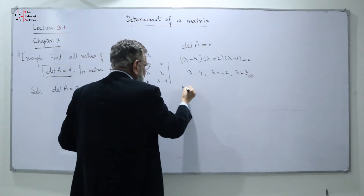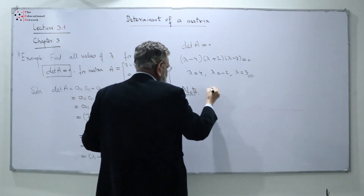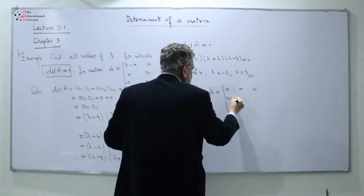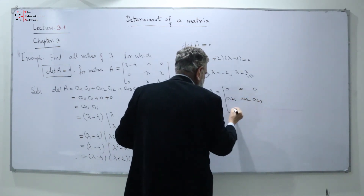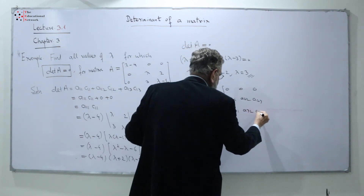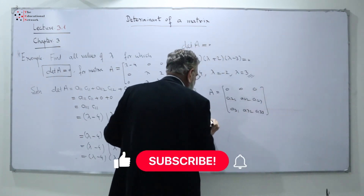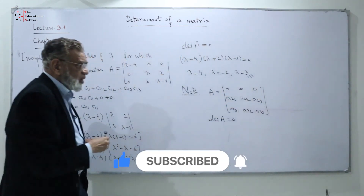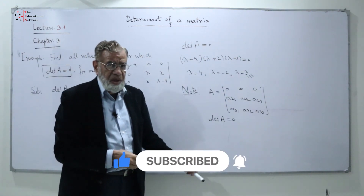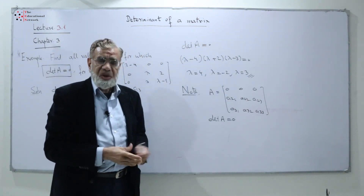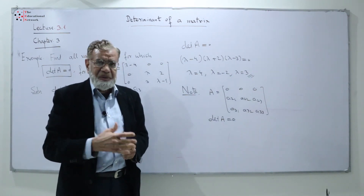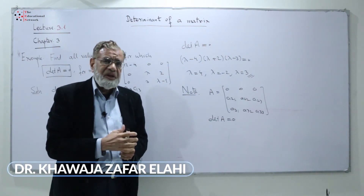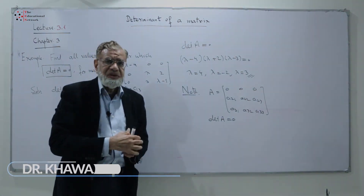We can note an important property: if any row or any column of a matrix is entirely zero, then the determinant equals 0 immediately — no calculation needed. Finally, we will next discuss how to evaluate determinants using row operations, which is our next topic.